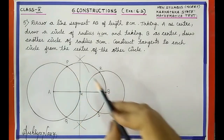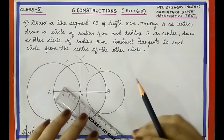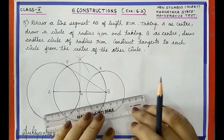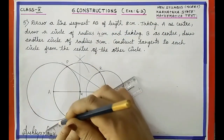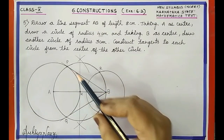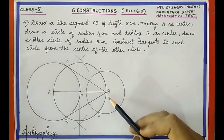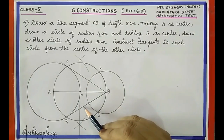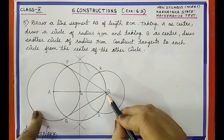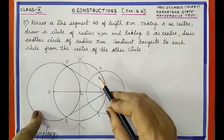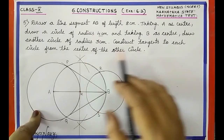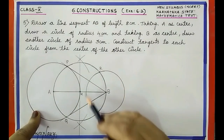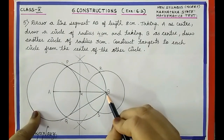Now join BP and BQ. The lines BP and BQ are the two tangents to the first circle from point B. Since B is the center of the other circle, these are the required tangents to each circle from the center of the other circle.